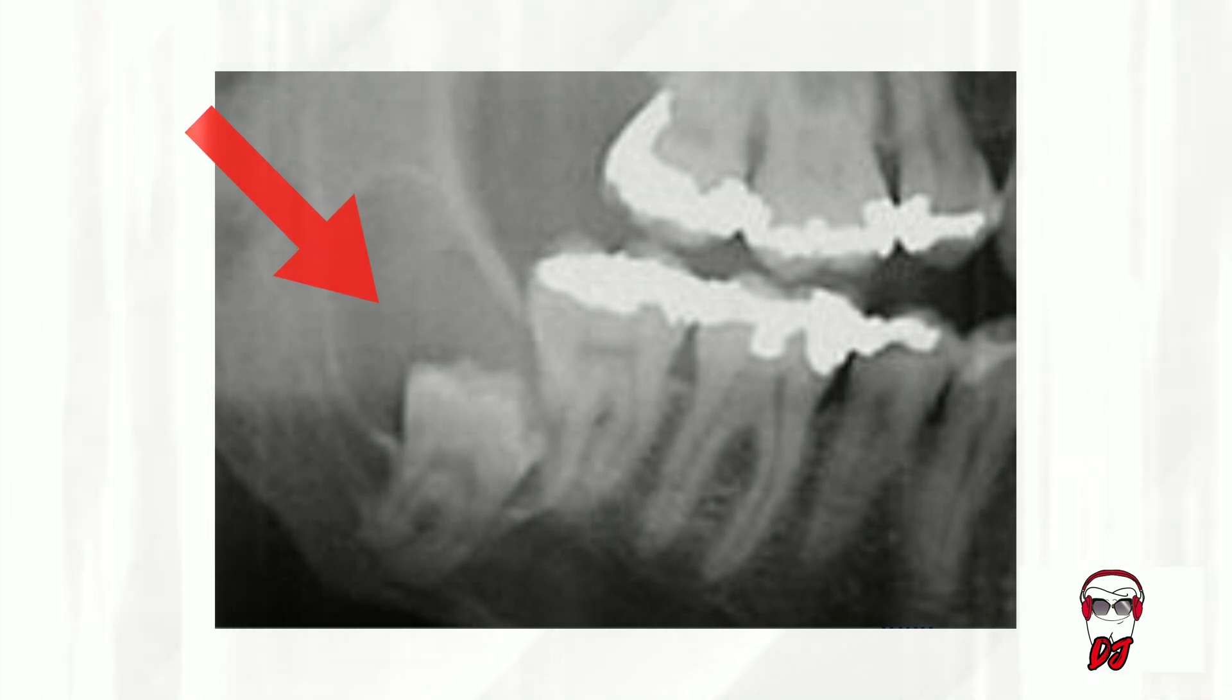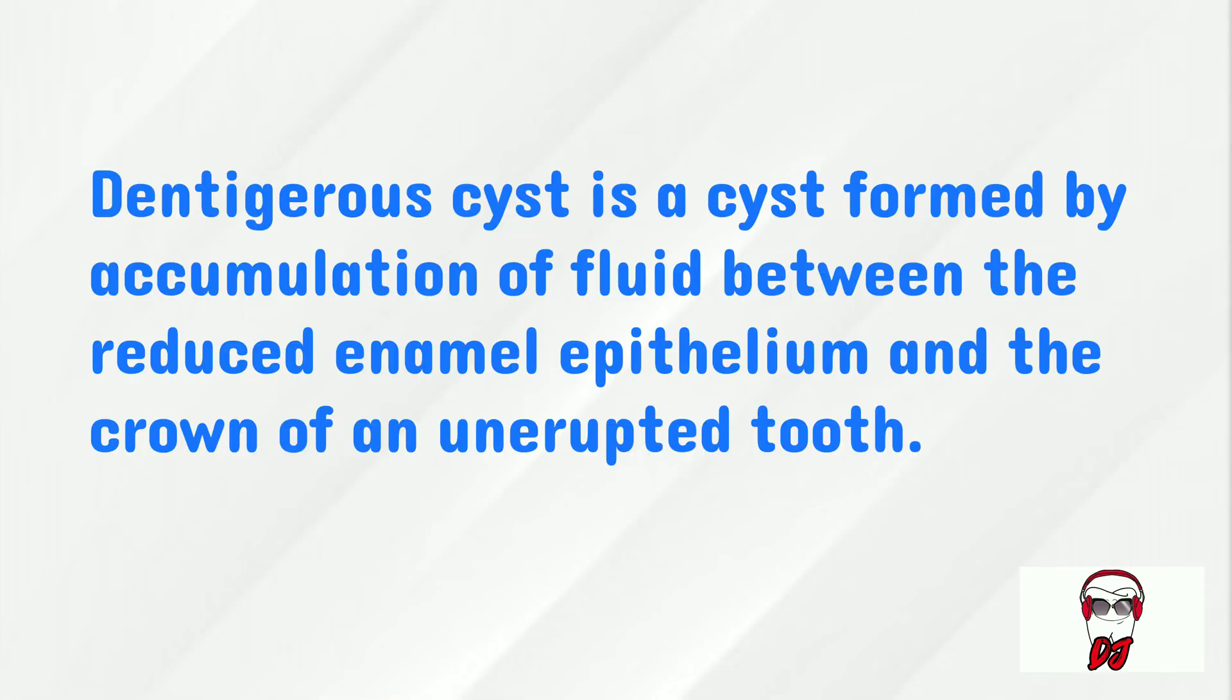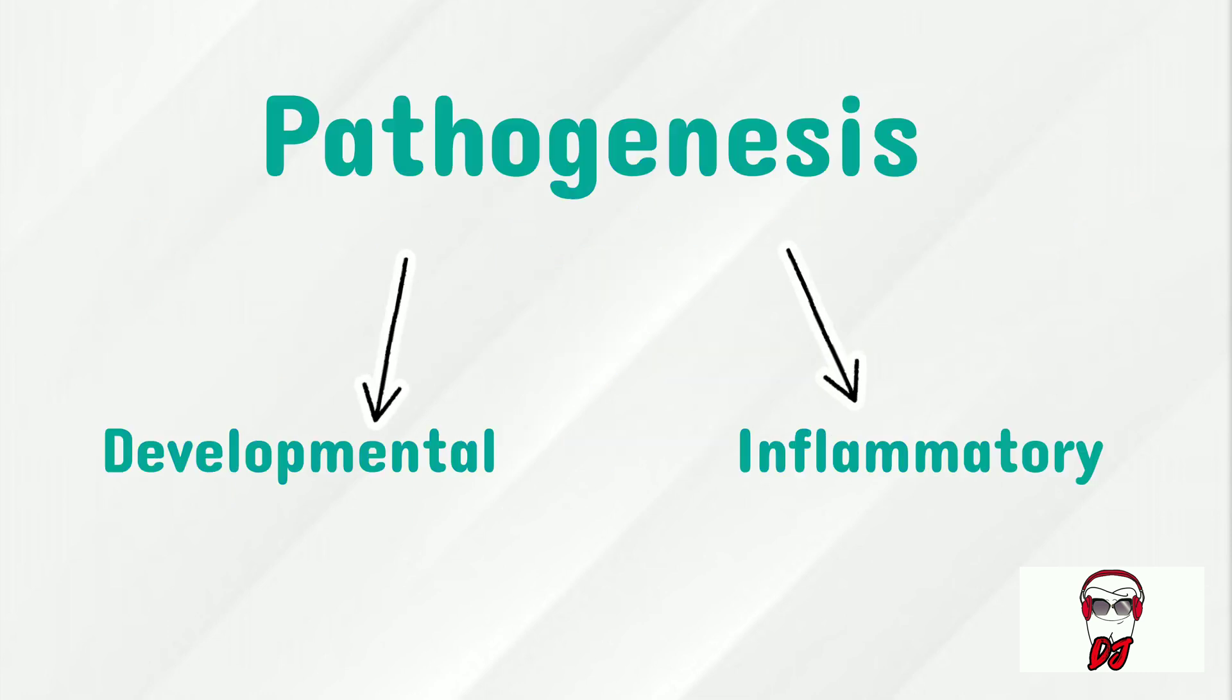So what am I? A dentigerous cyst is a cyst caused by the accumulation of fluid between the reduced enamel epithelium and the crown of an unerupted tooth. Now I'm usually a developmental cyst, but at times I can be inflammatory as well.